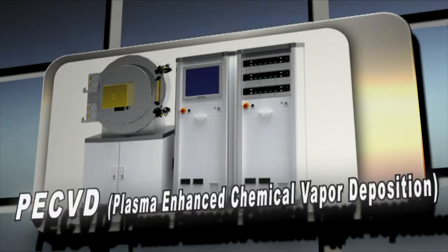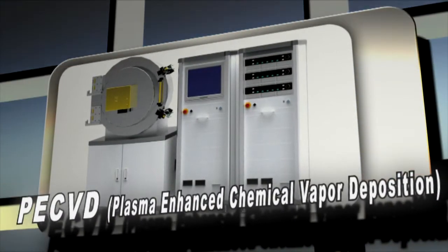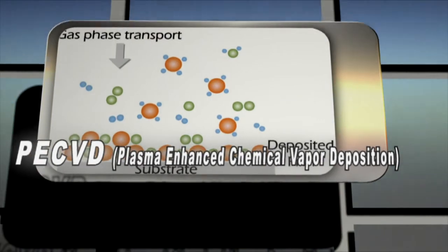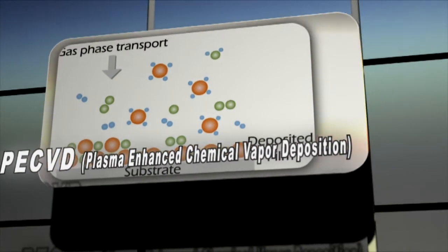PE-CVD system is an equipment that uses a glow discharge to synthesize DLC thin films. It has fast deposition and excellent surface profile of thin films.